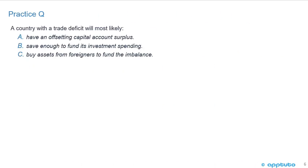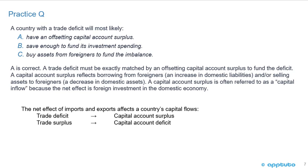Practice question one: A country with a trade deficit will most likely — A, have an offsetting capital account surplus; B, save enough to fund its investment spending; or C, buy assets from foreigners to fund the imbalance. The net effect of imports and exports affects a country's capital flows. So a trade deficit corresponds to a capital account surplus, and a trade surplus corresponds to a capital account deficit.